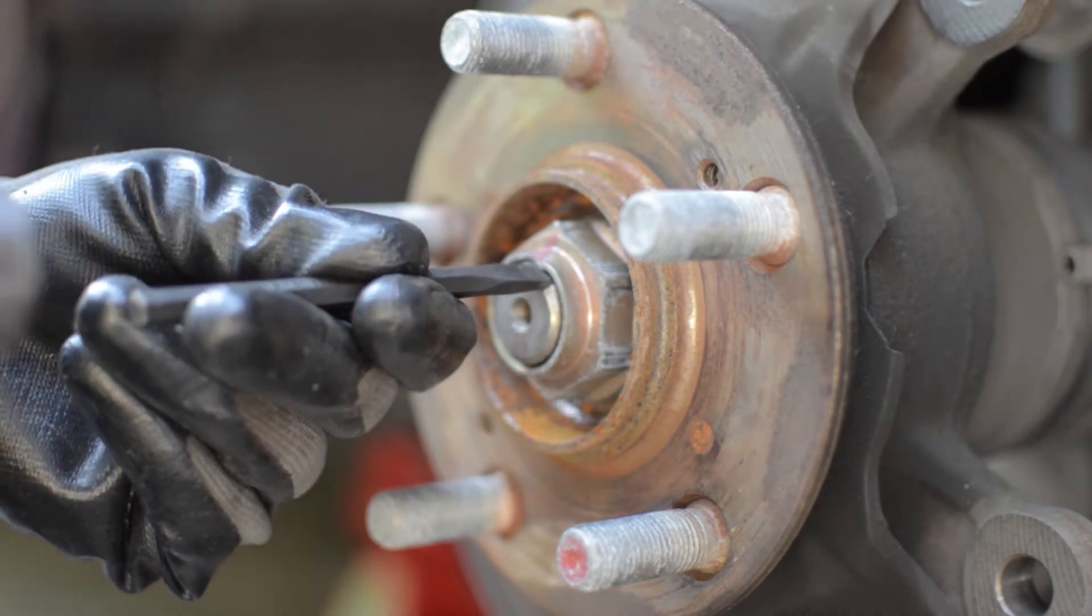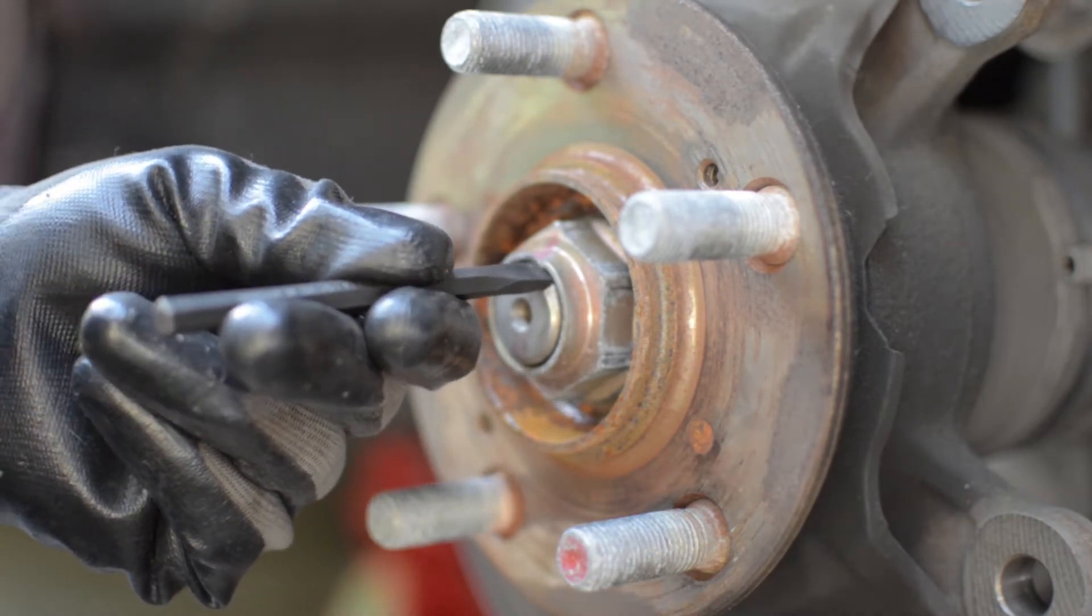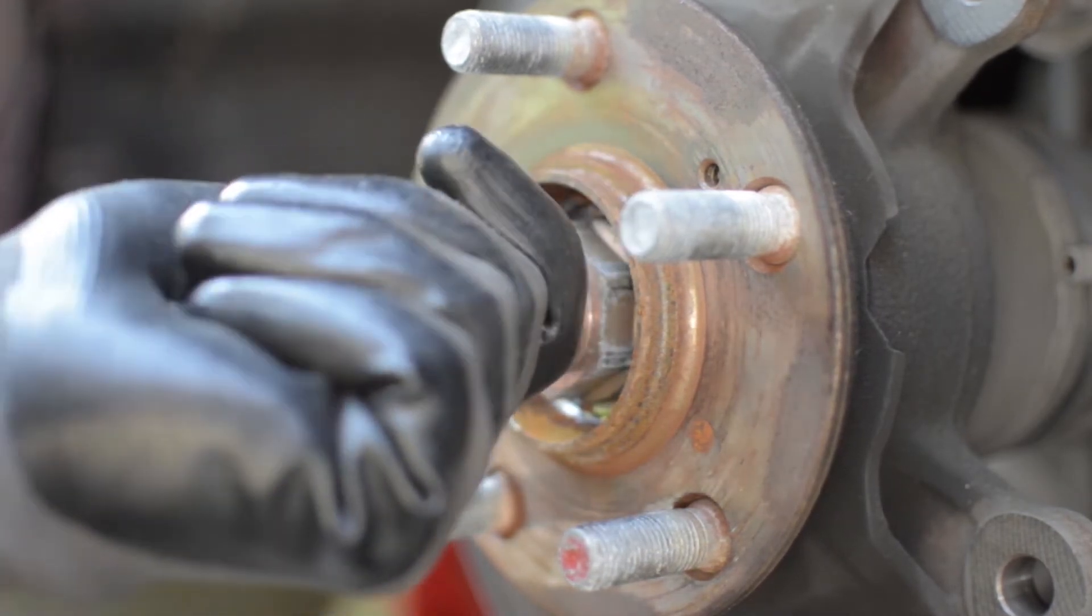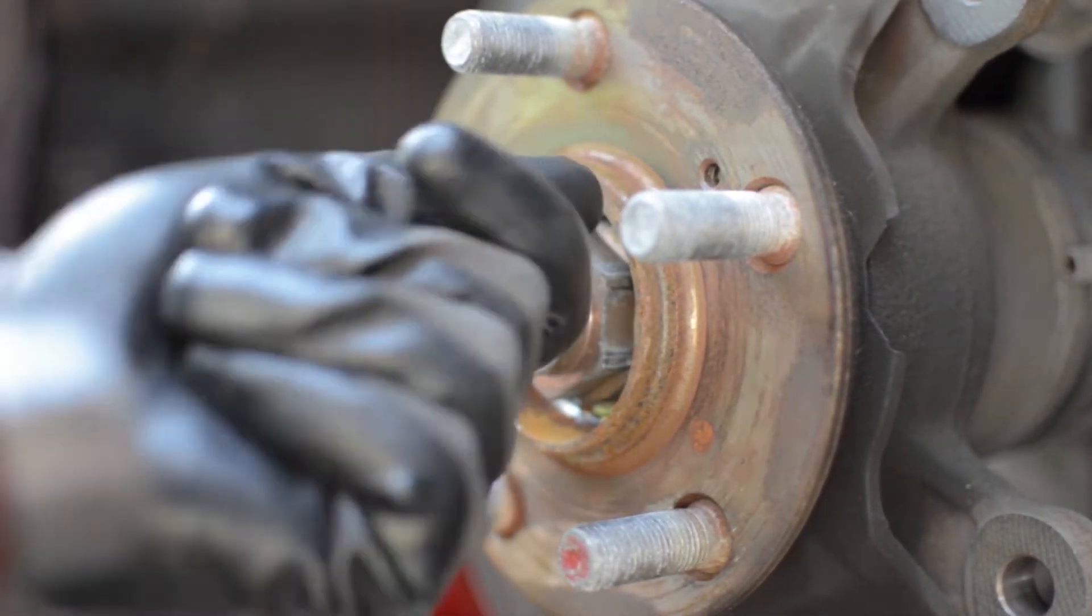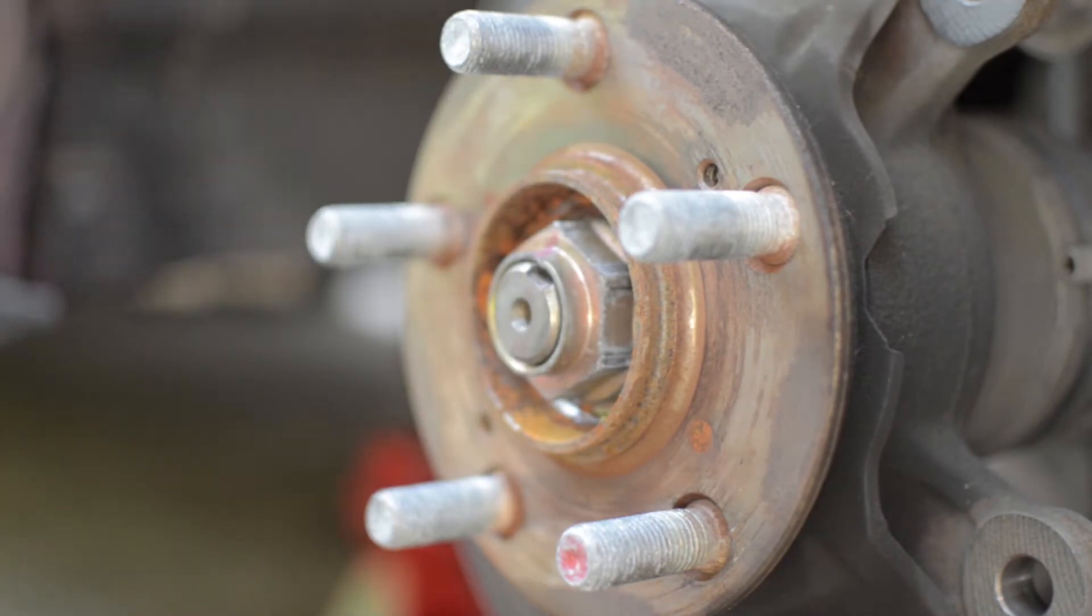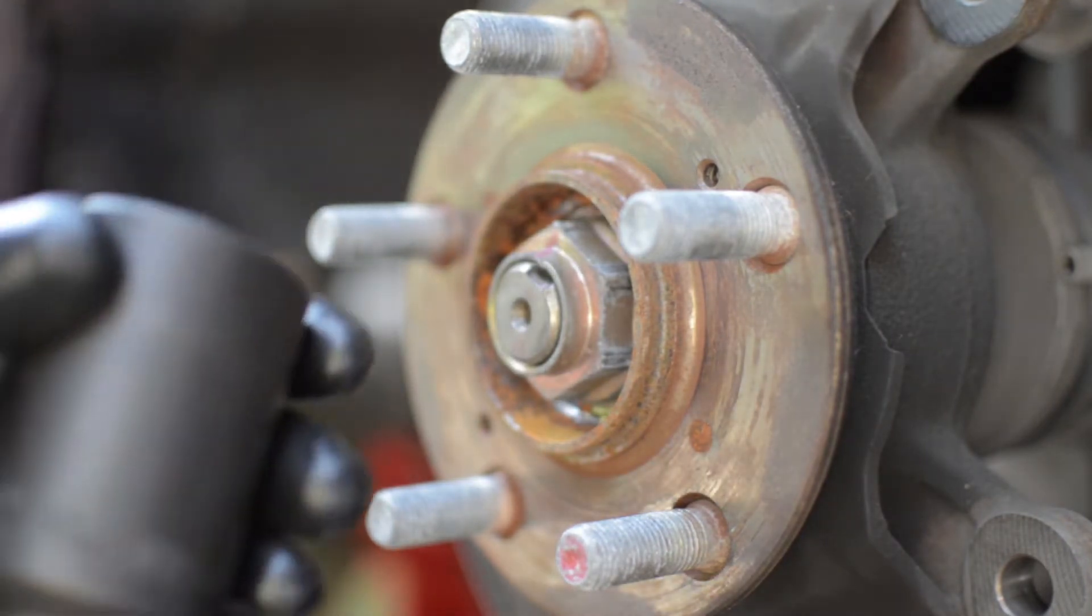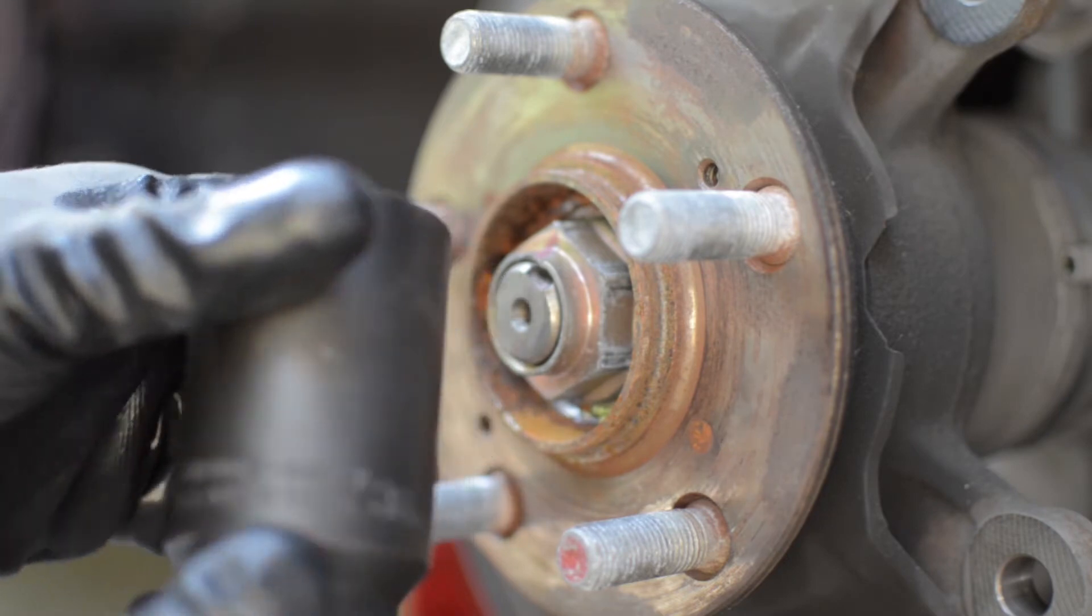I'm using a small chisel to straighten out that axle nut and give us clearance to unscrew it. I'm using a 36mm axle socket.